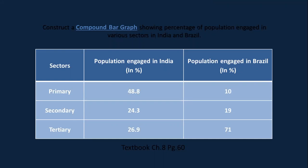A compound bar graph is also called a percentage bar graph. The key is to choose your scale appropriately — whether a large or small scale — based on the data given.